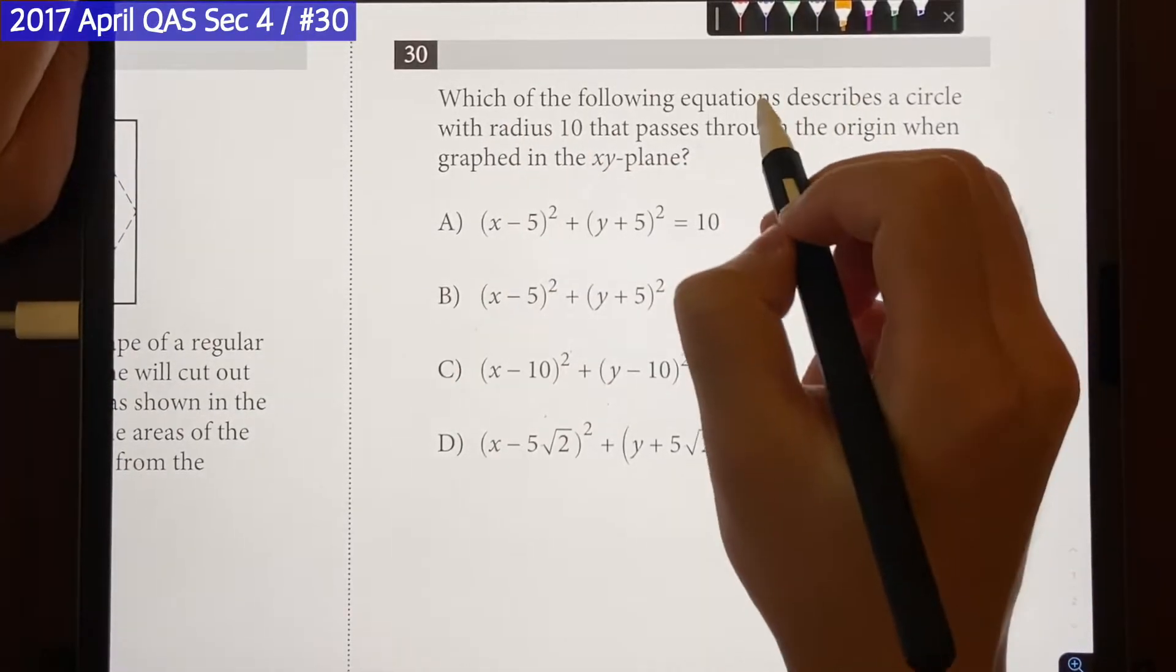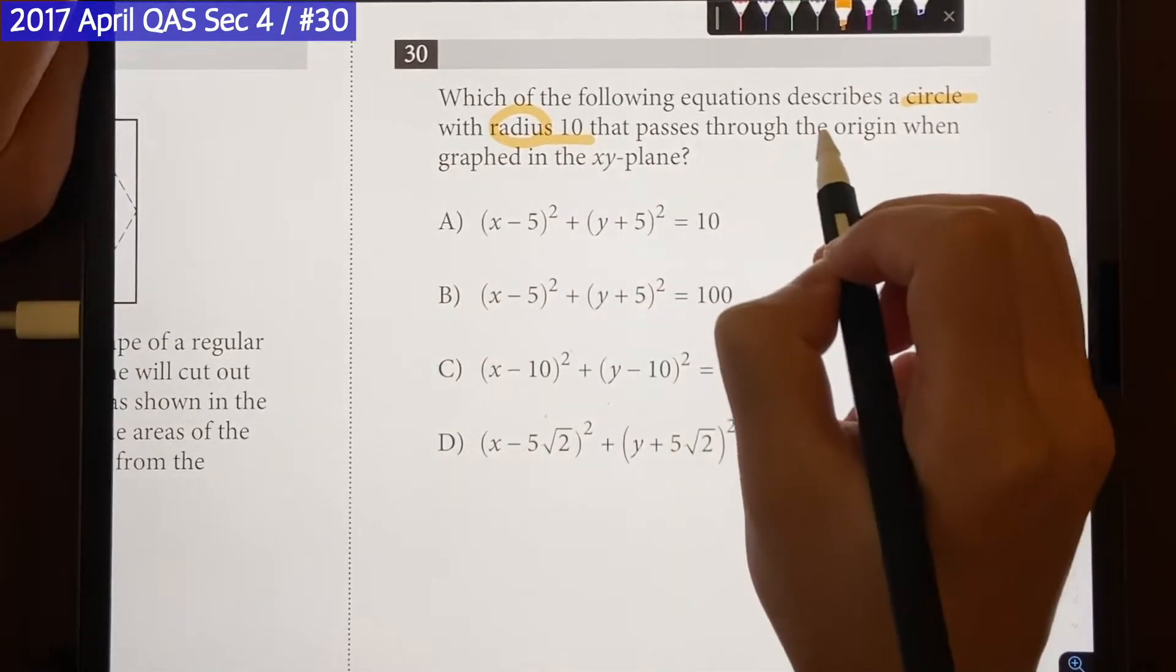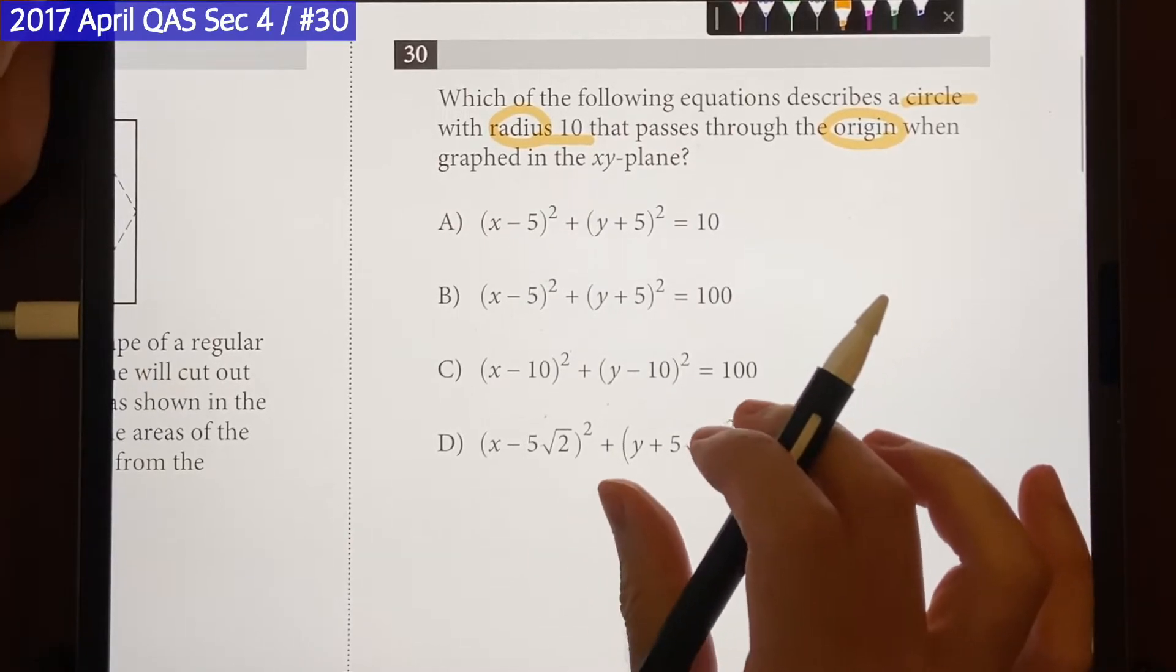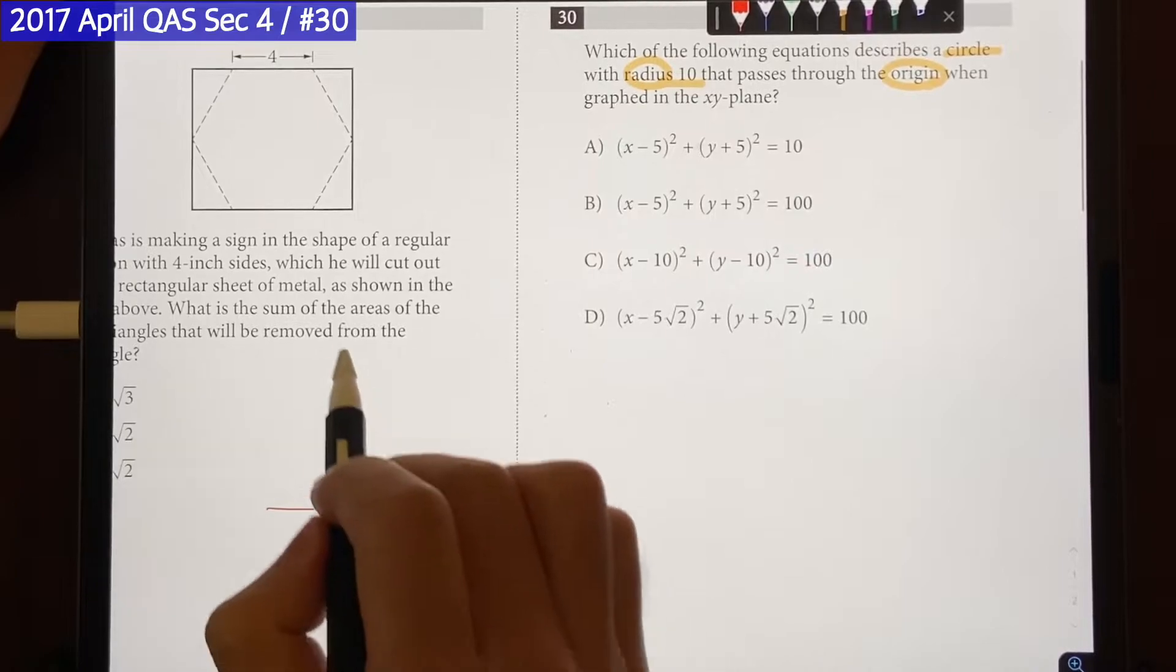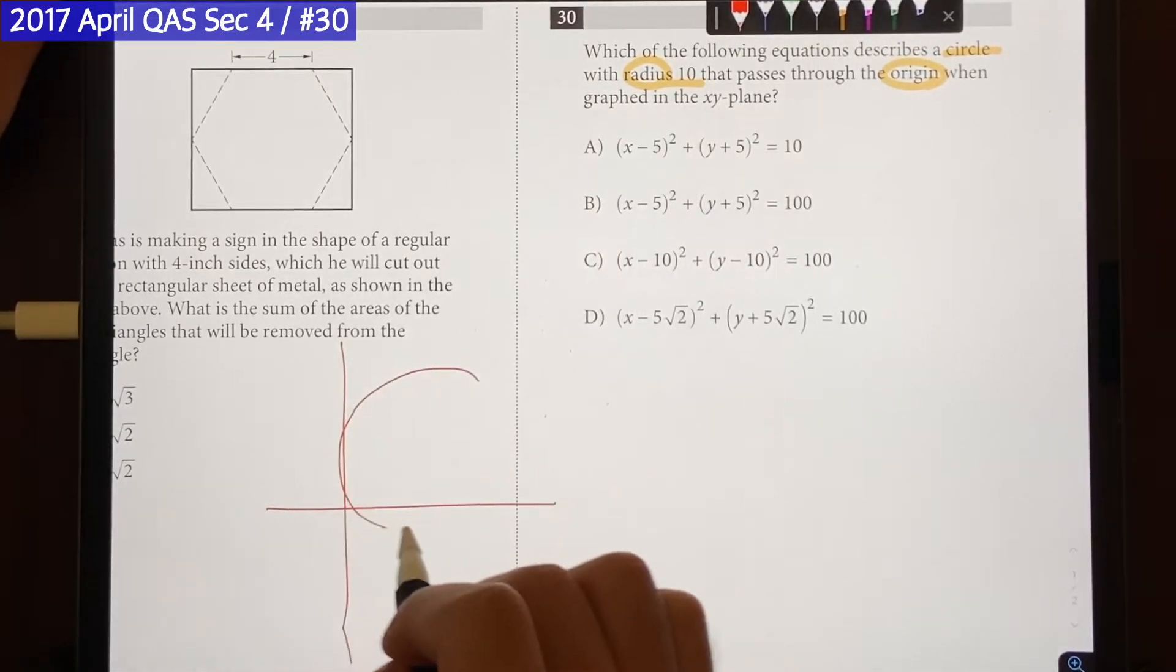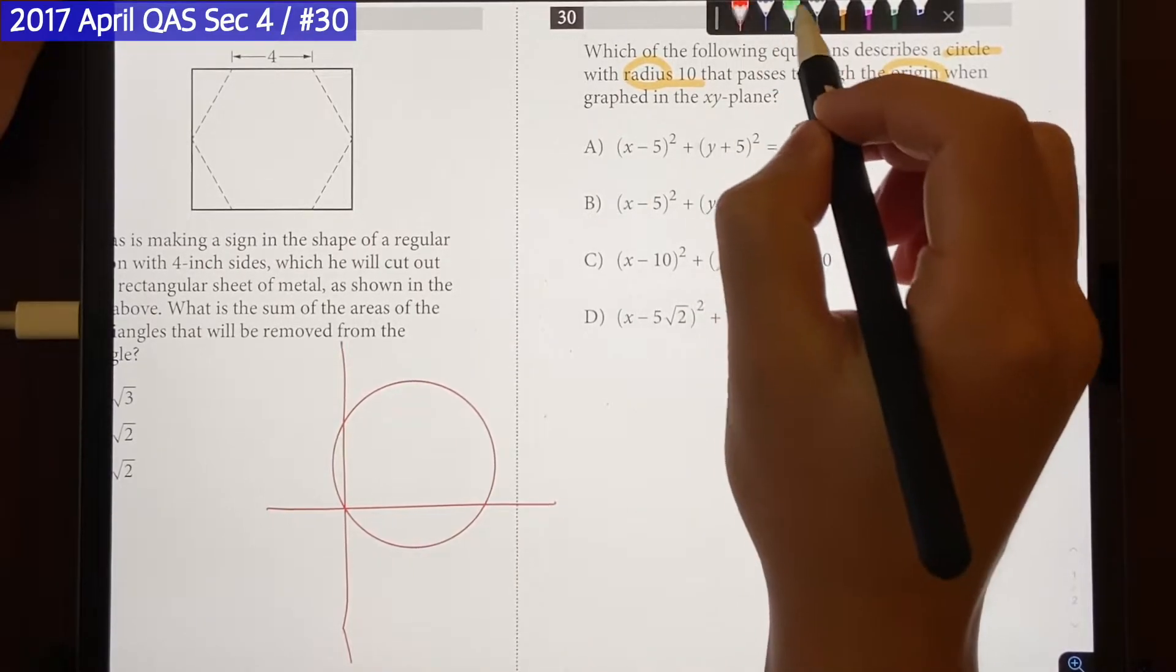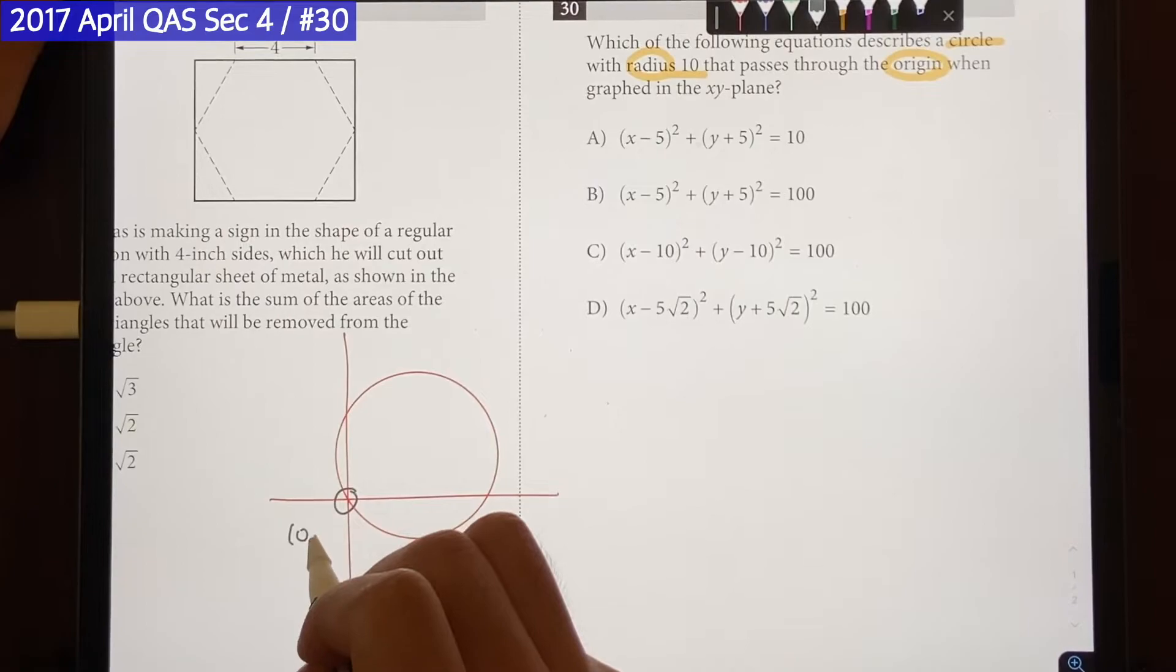So the question says which of the following equation describes a circle with radius of 10 that passes through the origin when graphed on the xy plane. So if we were to visualize what's going on here we have an xy plane that looks something like this and we also have a circle that goes through the origin. So the origin is going to be located right there which means it's going to have a coordinate of 0, 0